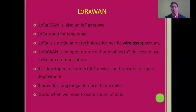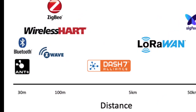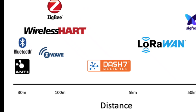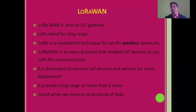LoRaWAN works over a long range of more than six miles. While SIGBI is only capable of transmitting 10 to 100 meters, LoRaWAN has the greater advantage with a reach of up to six miles. It is also good when we need to send a chunk of data.